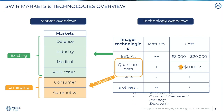Looking at existing markets, SWIR is mainly used in defense, a little in industry, and some in R&D, astronomy, and research. The InGaAs technology is the most mature — used for years, even decades — and is the technology used for all existing applications. However, InGaAs is quite expensive: a chip alone can cost several thousands of dollars, which doesn't fit specifications for the consumer or automotive fields.